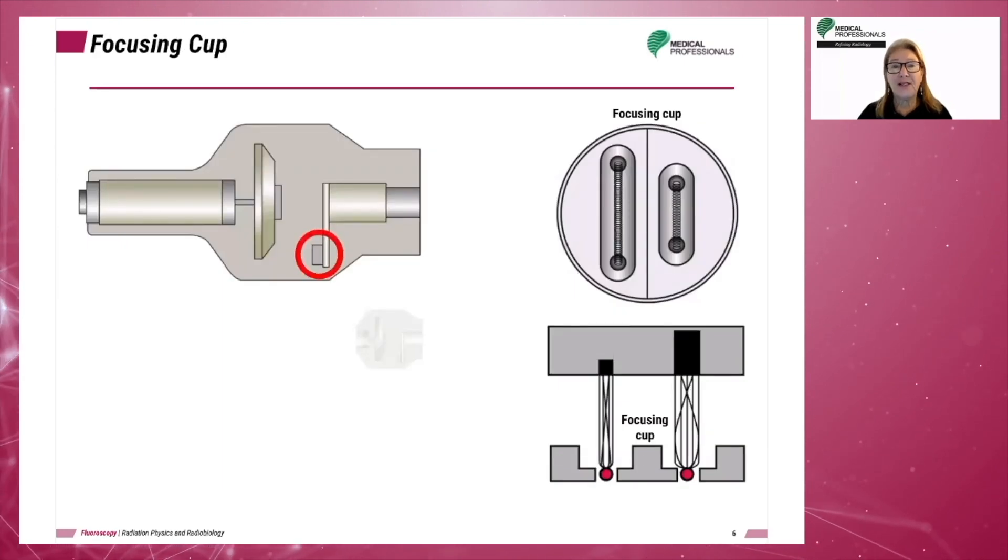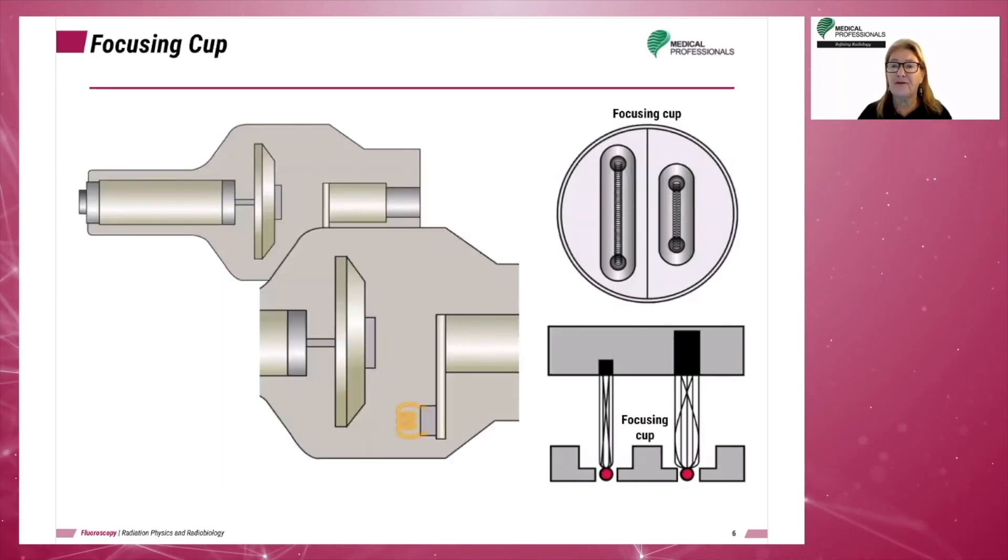The device used to keep the electrons close to the filament in the cathode is called a focusing cup. If the focusing cup was not present, the electrons would float freely within the tube. This would not be efficient for X-ray production because it would be difficult to control the number of electrons present for radiation production.